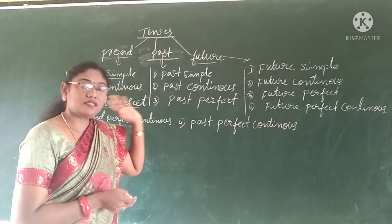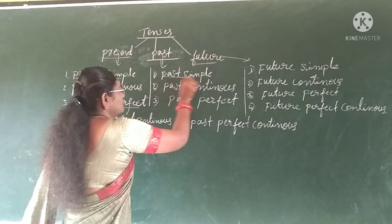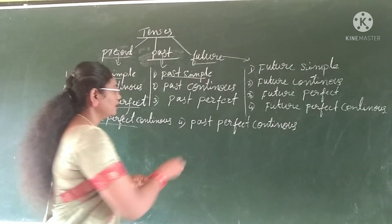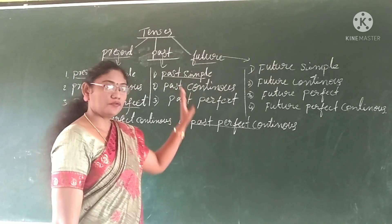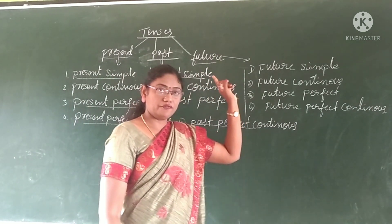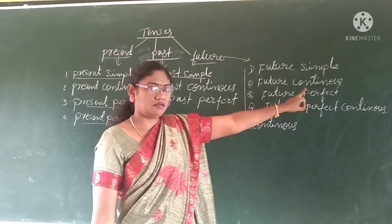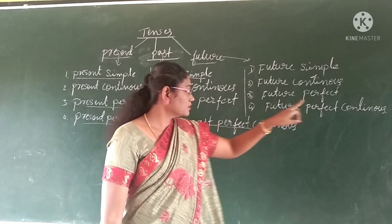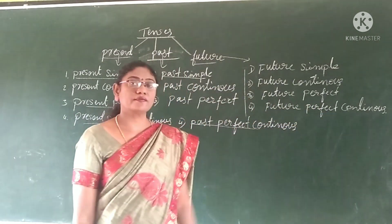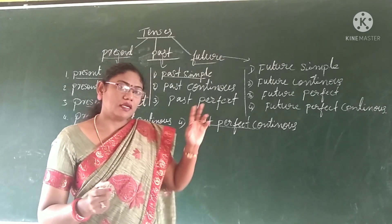Here we are in past tense, which also contains four types of tenses: past simple tense, past continuous tense, past perfect tense, and past perfect continuous tense. These are the four types of tenses for past tense. Now when we come to future tense — future simple, future continuous tense, future perfect tense, and future perfect continuous tense. So generally, we can say there are twelve types of tenses in total.